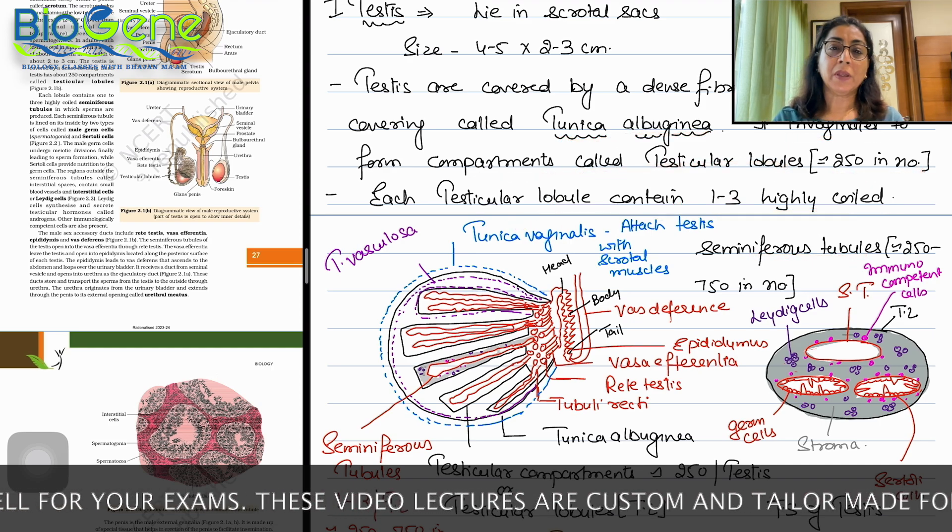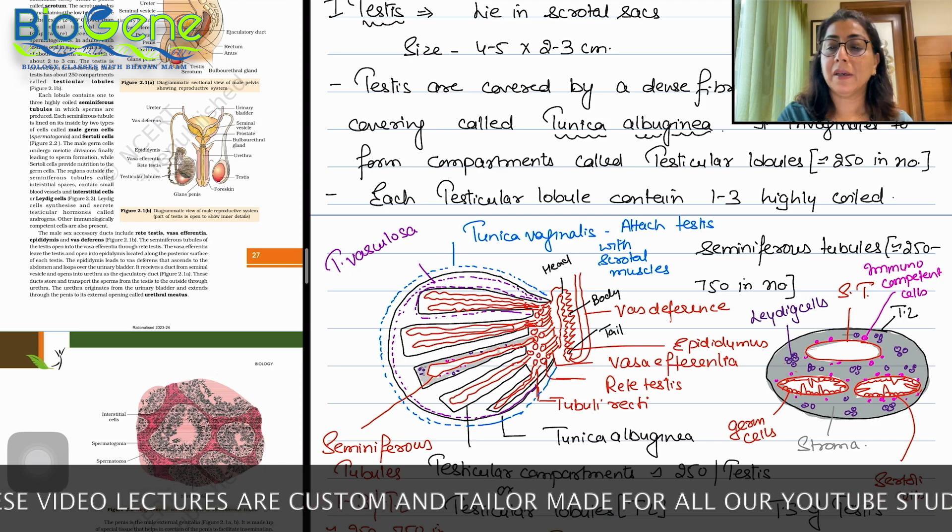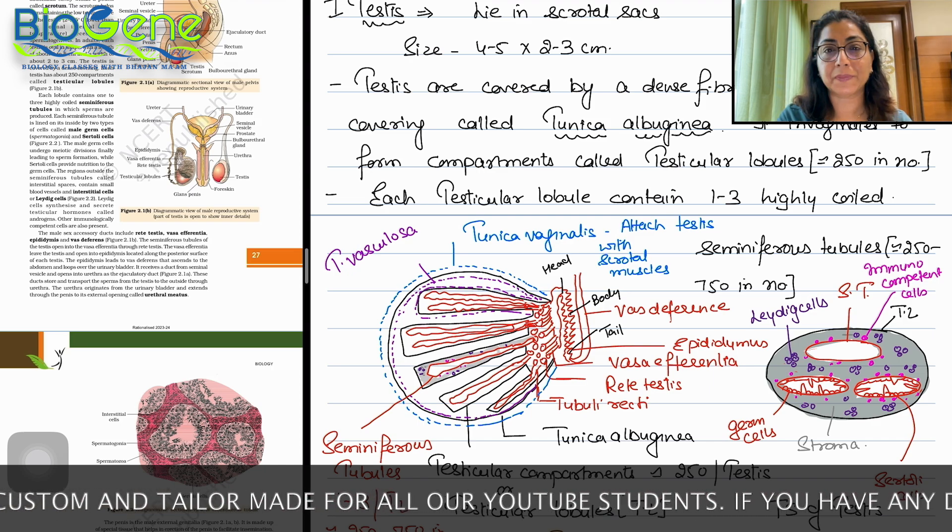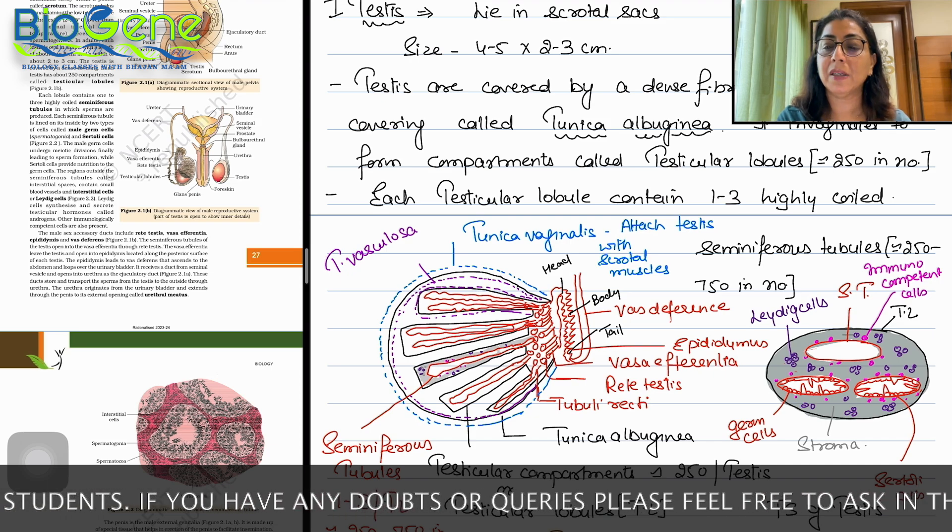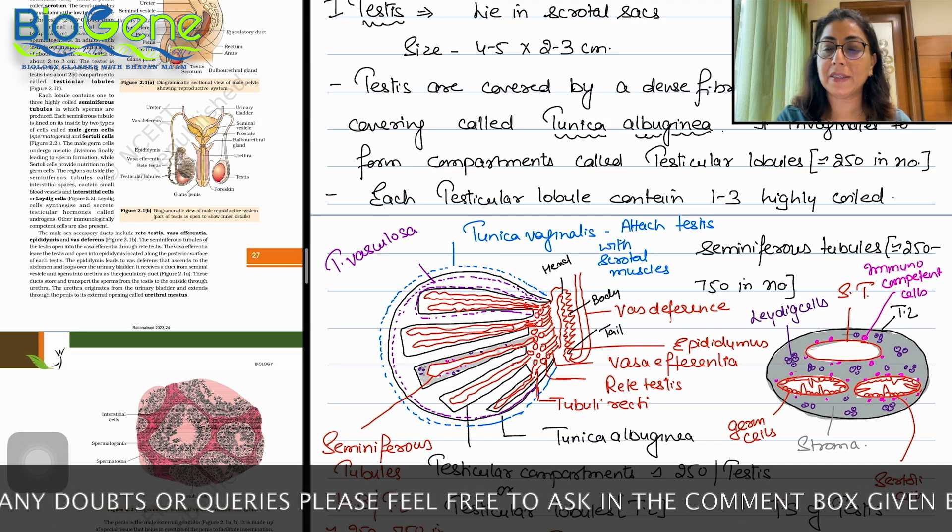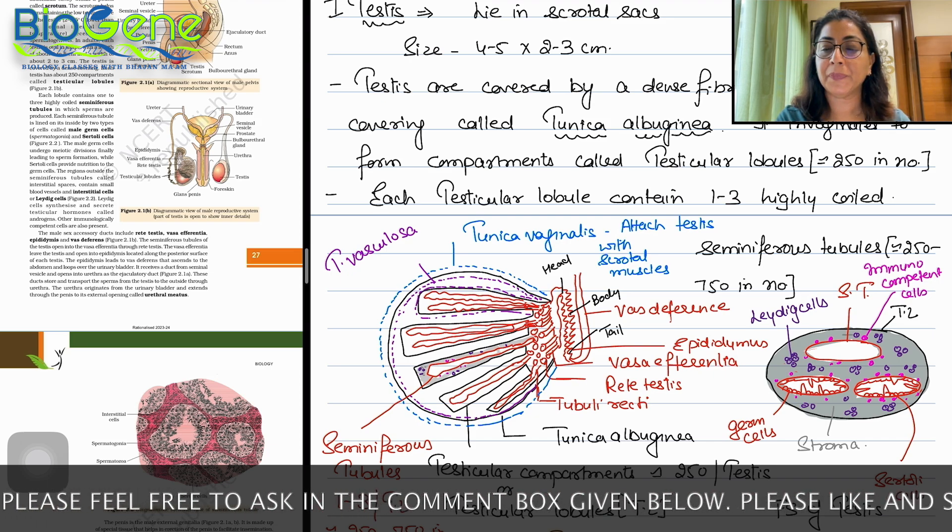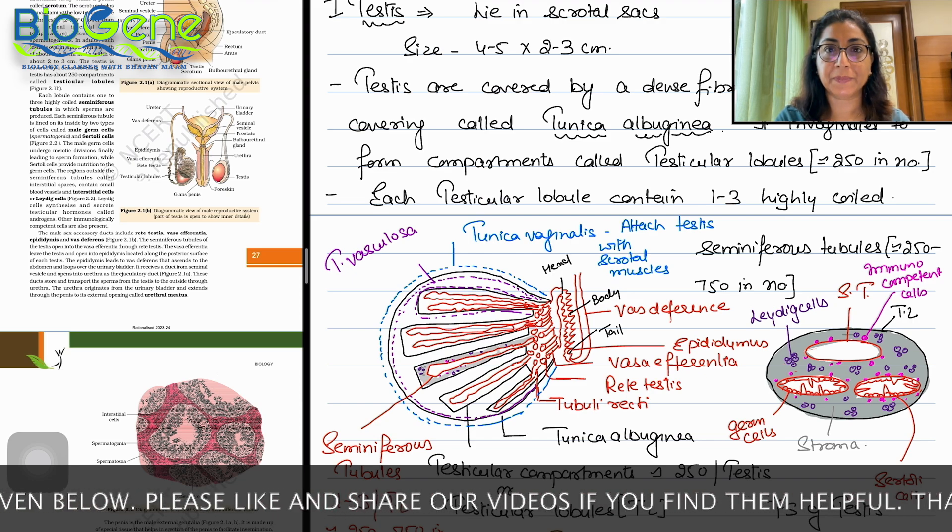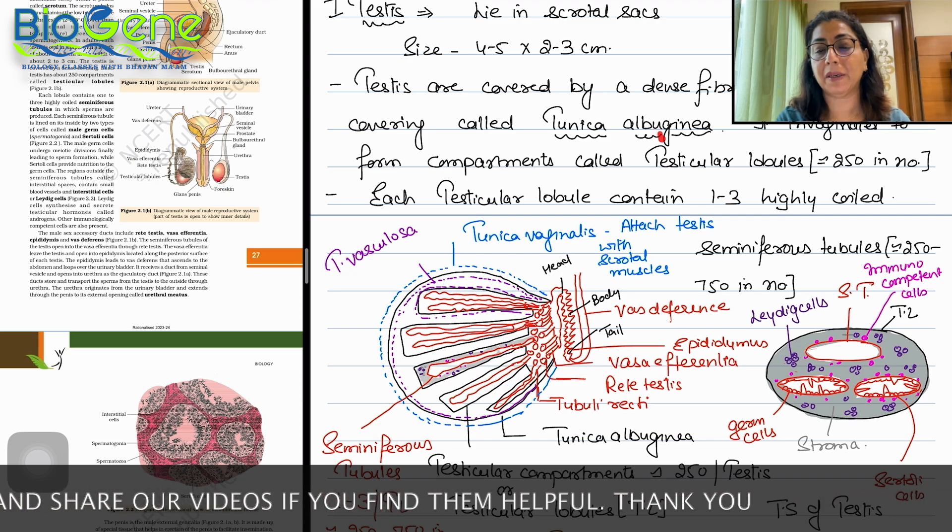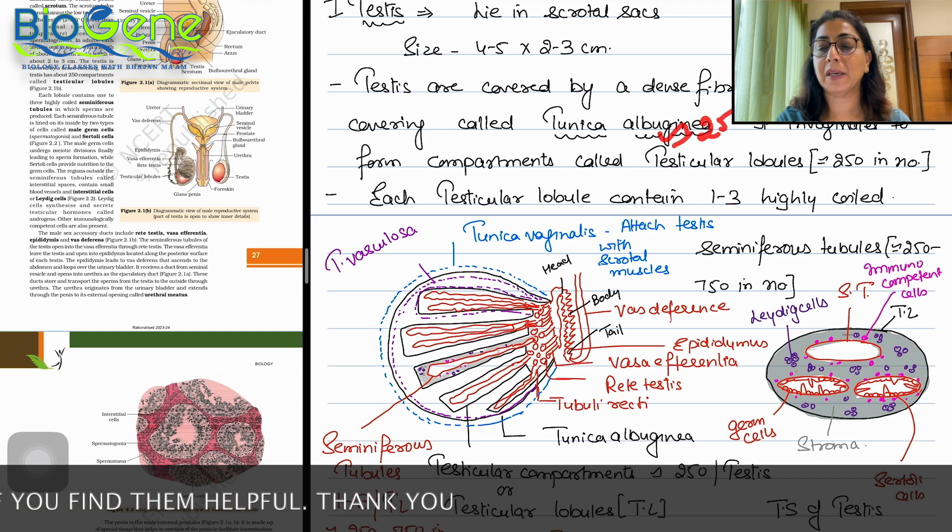Each testicular lobule contains 1 to 3 highly coiled seminiferous tubules. So, how many tubules are there? See here. This is the testes. Testes are covered by dense connective tissue tunica albuginea. Tunica albuginea invaginates and forms compartments we call testicular lobules. These compartments are approximately 250.